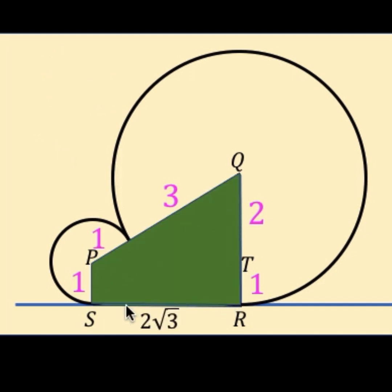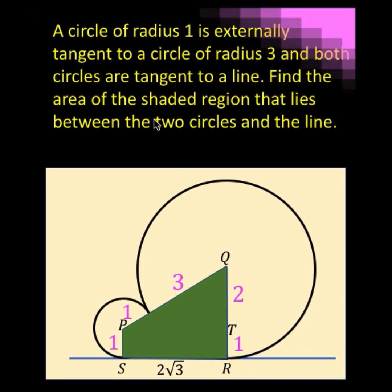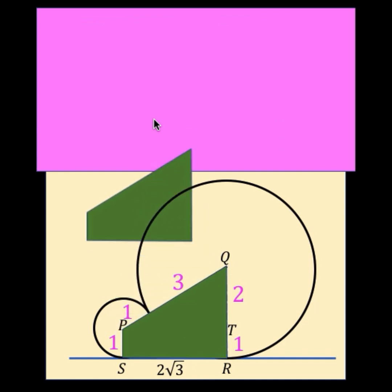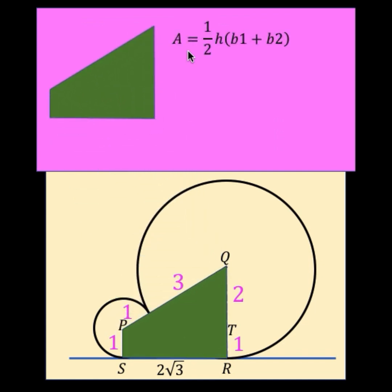Let's focus our attention to this trapezoid. What is the area of this trapezoid? We can think of QR as base 1, PS as base 2, and SR as our height. So using the formula for the area of a trapezoid, we have one half times the height times the sum of the two bases.